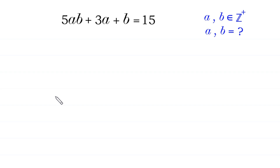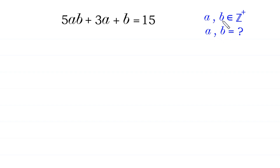Hello, welcome to how to solve this very nice Diophantine equation: 5ab plus 3a plus b is equal to 15. We need to find all possible values of a and b, where a and b are positive integers.